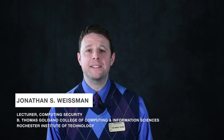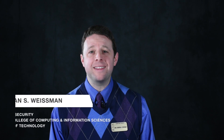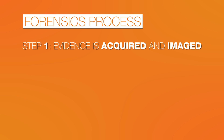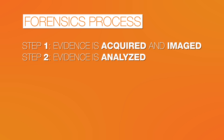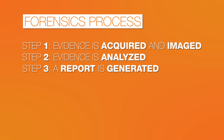The forensic process can be broken down into three steps. In the first step, evidence is acquired and imaged. The evidence is analyzed in the second step. Finally, in the third step, a report is made, which should be understandable to even non-technical individuals. Let's explore each of these three steps.